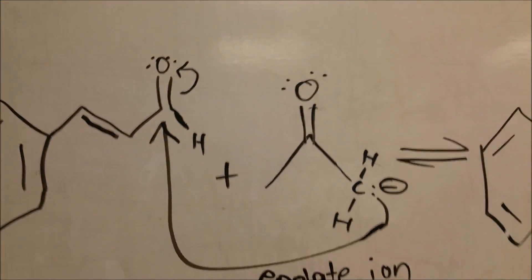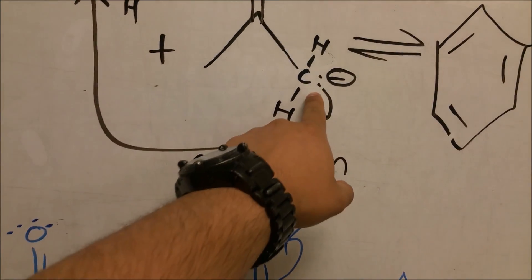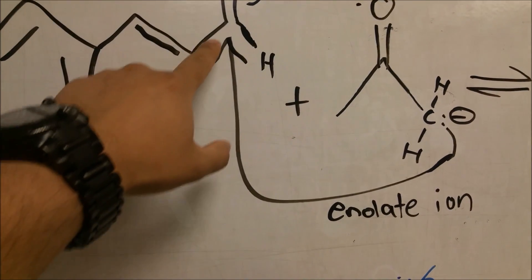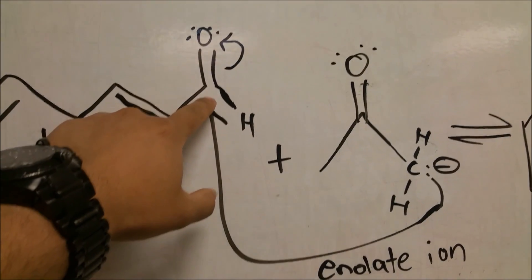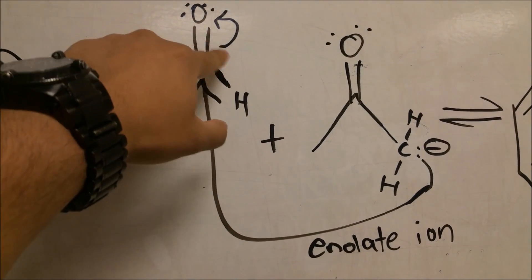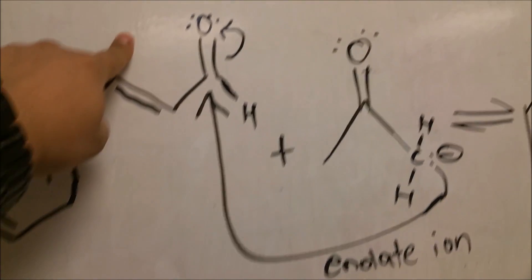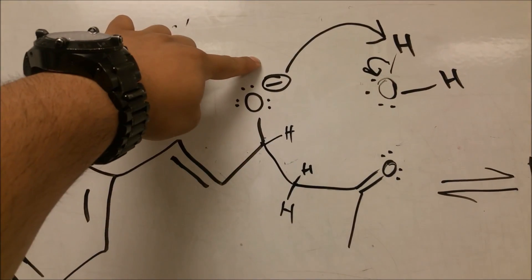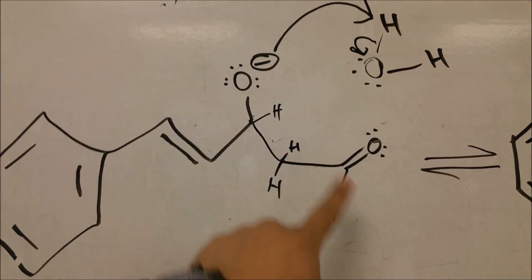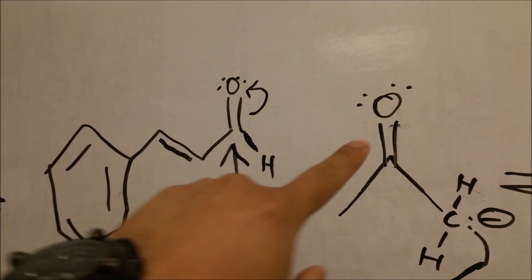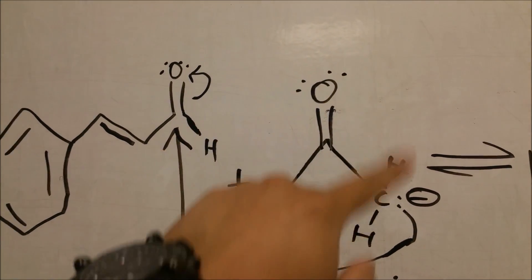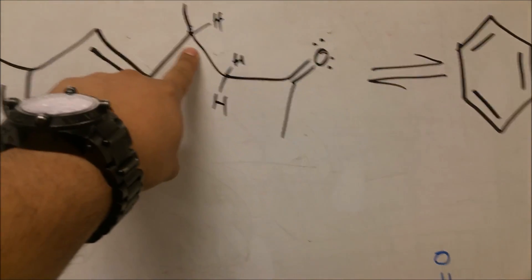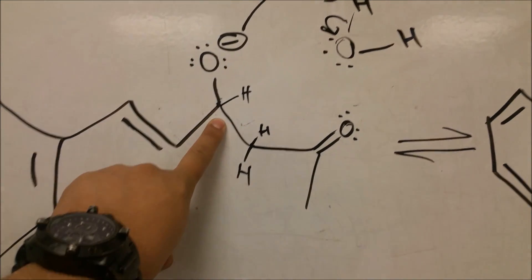The enolate ion with the side with the lone pair on the carbon would attack this carbon here, and simultaneously would push these electrons of that double bond to the oxygen. And that would cause the oxygen to have that negative charge. Now, as you can see here, that acetone molecule is now attached to that carbon that was in the carbonyl group.